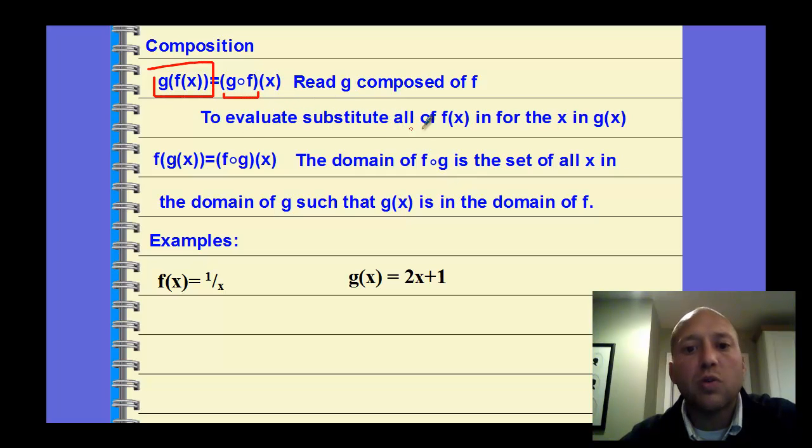To evaluate, you substitute all of f(x) in for the x in g(x). So you're putting f(x) in for the x in g(x). We can also write the other way around: f(g(x)), written as f composed of g of x.